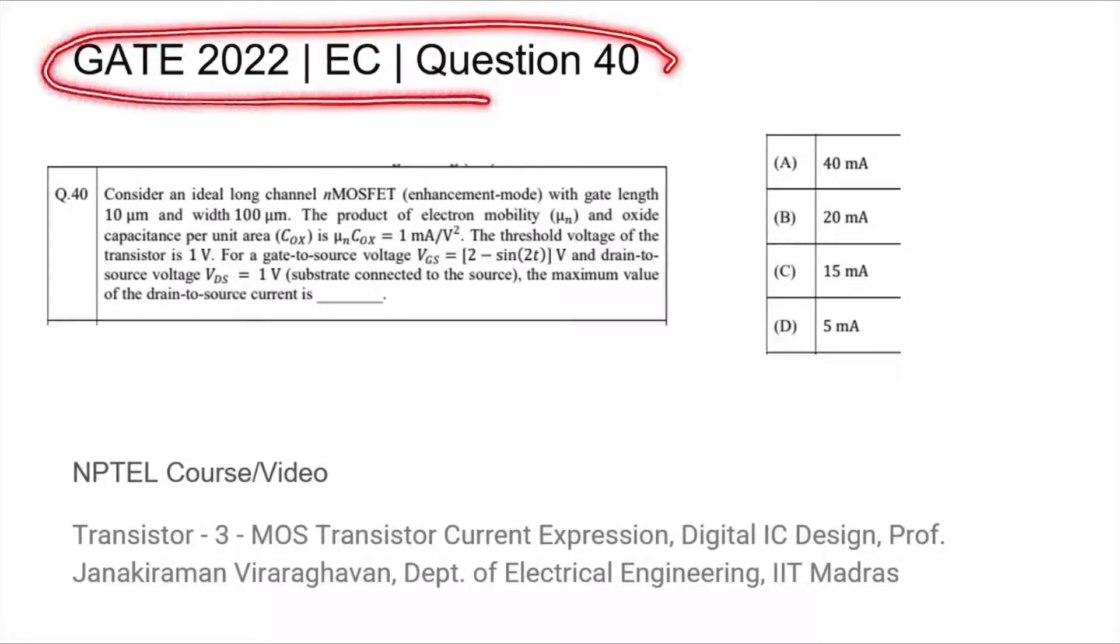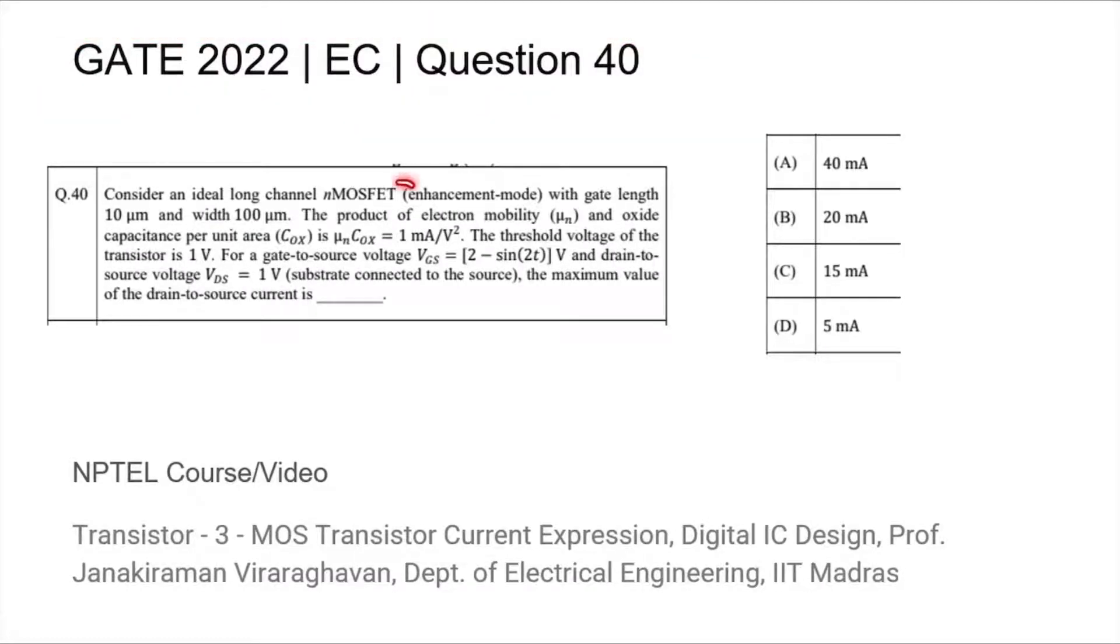This is question 40 from the GATE 2022 EC paper where we are given an ideal long channel nMOSFET with a gate length of 10 micron and a transistor width of 100 micrometer. We are given μn·Cox equal to 1 milliampere per volt squared, the threshold voltage of the transistor is 1 volt, and the drain to source voltage is 1 volt. We are asked what the maximum value of the drain to source current is among these options.